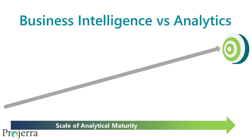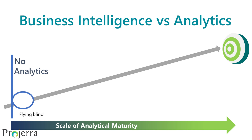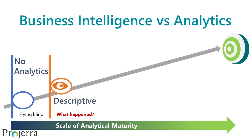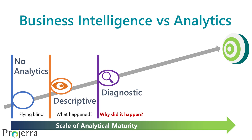The difference between business intelligence and business analytics really comes down to the scale of analytical maturity within the organization. Some organizations do no data analysis at all — they're essentially flying blind. Then there are those that practice descriptive analysis, always asking what happened last month or last quarter, how this year's operations compared to last year's. Then there are those asking what's going on and why — digging into the understanding of their operations. The combination of descriptive and diagnostic analysis is what we refer to as business intelligence.